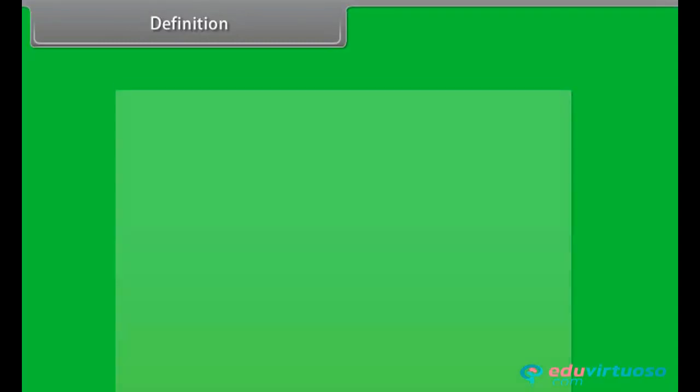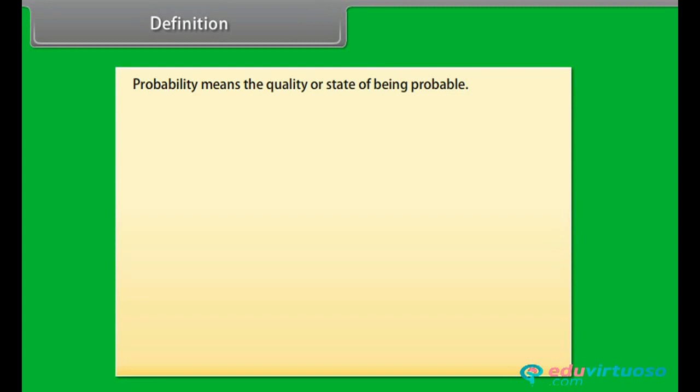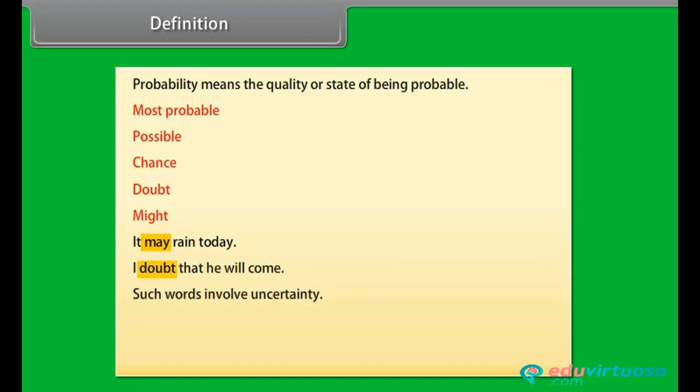Definition. Probability means the quality or state of being probable. In case of probability, we use the words most probable, possible, chance, doubt, might, etc. For example, it may rain today. The word may in the sentence shows probability. I doubt that he will come. Such words involve uncertainty.